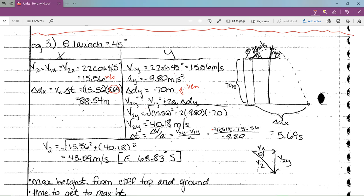Vx and delta t, so your range is 88.54 meters. Convince yourself, try some other angles, 40 degrees, 50 degrees, that you won't get a number larger than 88.54. To get the velocity with which it hits the ground, my vx is still 15.56. My y is going to be v2y, 40.18. The Pythagorean theorem gives 43.09 meters per second east, 68.83 degrees south.